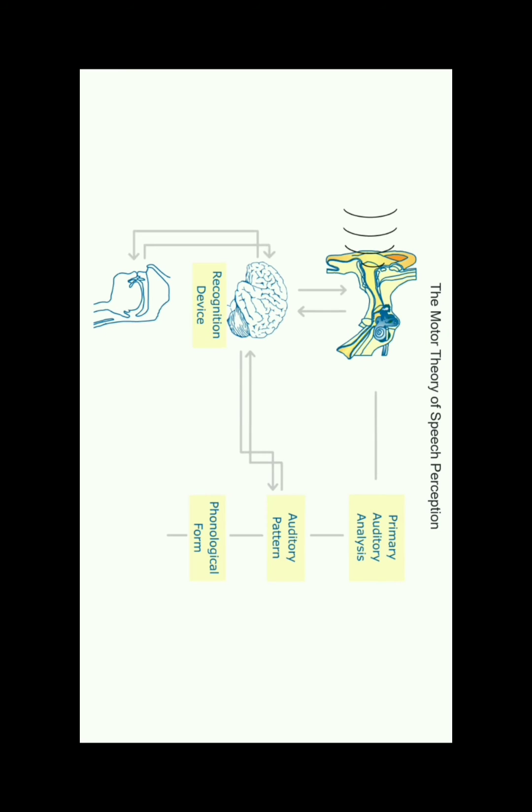First, the ear amplifies the incoming signal and transmits it to the auditory nerve. During a primary auditory analysis, the signal is filtered.